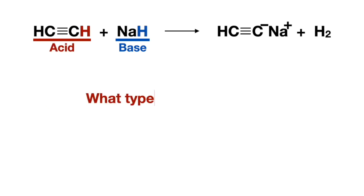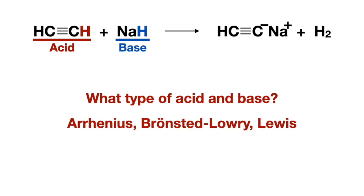Now we're asked what type of acid and base: Arrhenius, Bronsted-Lowry, or Lewis. The acid was a proton donor but there is no hydroxide in the reaction, so it cannot be an Arrhenius acid. The base is a negatively charged atom and the acid being a proton donor eliminates Lewis, making this a Bronsted-Lowry acid and a Bronsted-Lowry base.